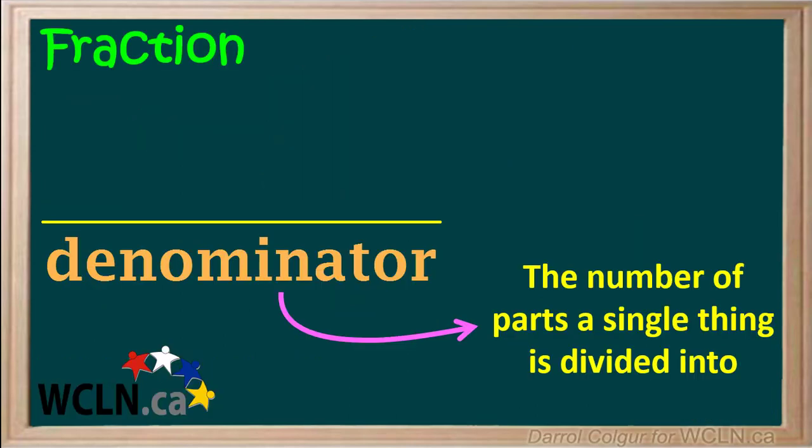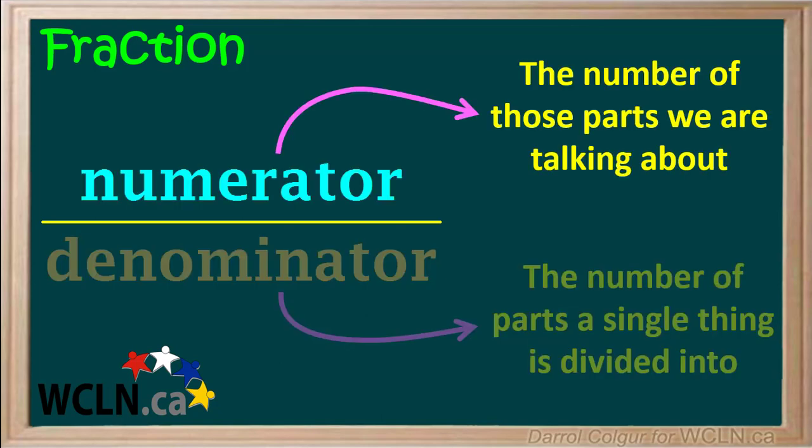To review: the denominator, or the number on the bottom of a fraction, tells us how many parts a single thing is divided into. And the numerator, or the number on top of the fraction, tells us the number of those parts we're talking about.